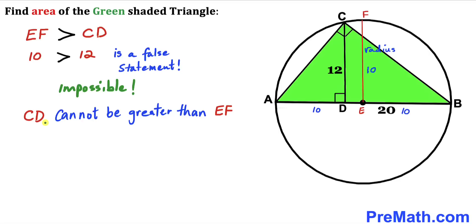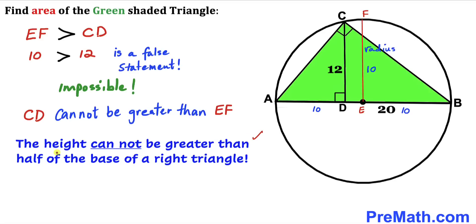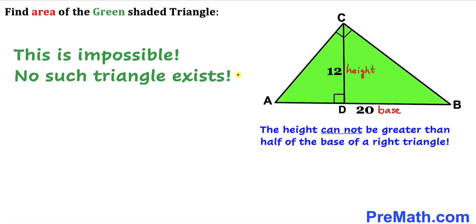We conclude that height CD cannot be greater than radius EF. Here's our bottom line: the height cannot be greater than half of the base of a right triangle. Our conclusion: no such triangle exists, because the height cannot be greater than half of the base of a right triangle. Thanks for watching, and please don't forget to subscribe to my channel for more exciting videos.